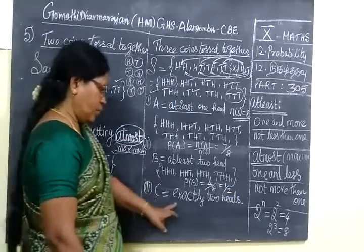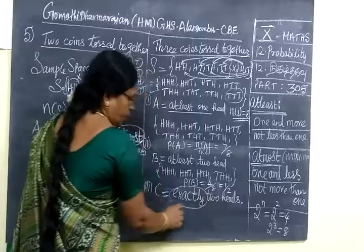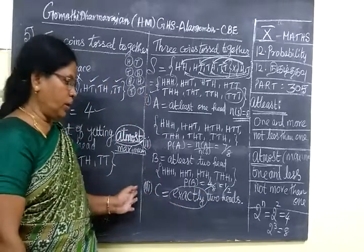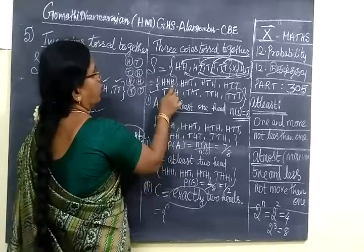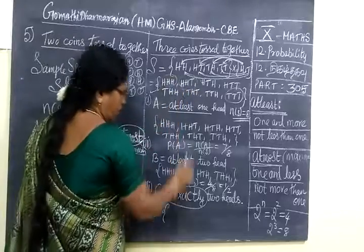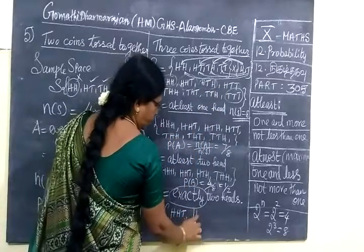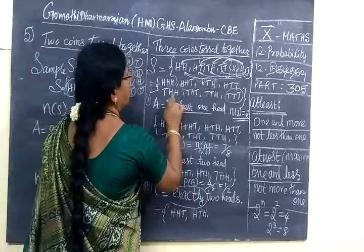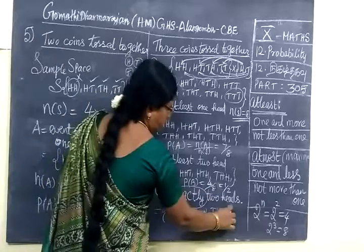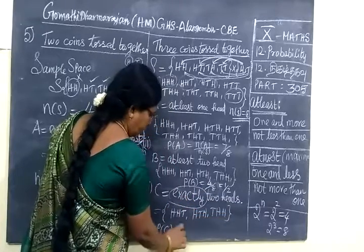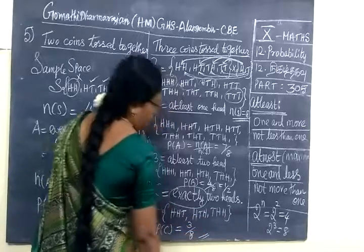Then for the third one, C equals exactly 2 heads. Only exactly means correctly. Exactly 2 heads, not less than 2 heads or more than 2 heads, exactly 2 heads. So for this, here 3 heads, so you can't select it. Here exactly 2 heads: H H T. Here also exactly 2 heads: H T H. This one, no. The third one: T H H. Other things you can't write. So therefore P(C) equals 1, 2, 3. So 3 by total number is 8.